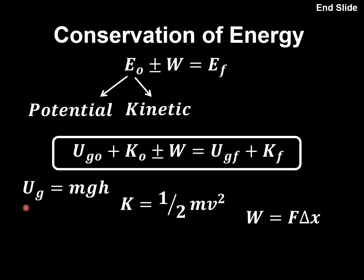The gravitational potential energy equals mass times gravity times height. Kinetic energy is one-half times mass times speed squared. And the work done equals some applied force times the displacement of that force.